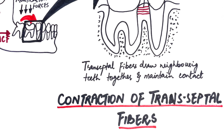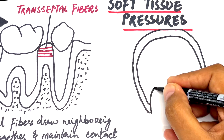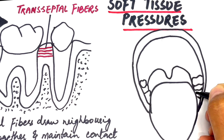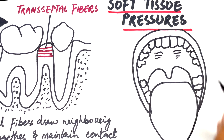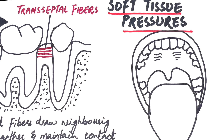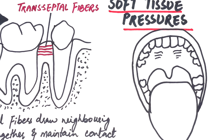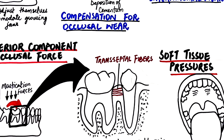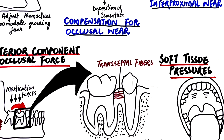Soft tissue pressures from the cheeks and tongue may also push teeth in a mesial direction. However, studies show that when soft tissue pressures are absent — for example in patients with Noma or Cancrum Oris, where they have lost a major part of the soft tissue of the face — teeth instead of drifting mesially tend to drift outwards towards the site where there is no soft tissue pressure. This suggests that soft tissue pressure, although it does not play a major role in mesial drift, does influence and maintain tooth position.